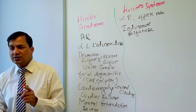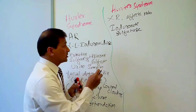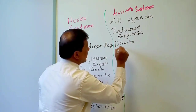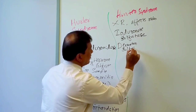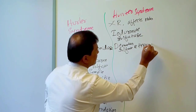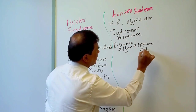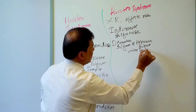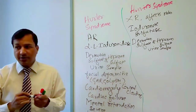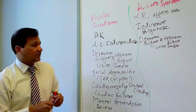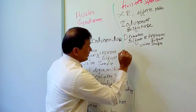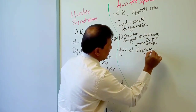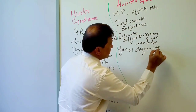There will be elevation of dermatan sulfate and heparan sulfate in the urine sample of Hunter syndrome patients — just like Hurler syndrome, both dermatan sulfate and heparan sulfate are elevated. Facial deformities are also seen in Hunter syndrome.